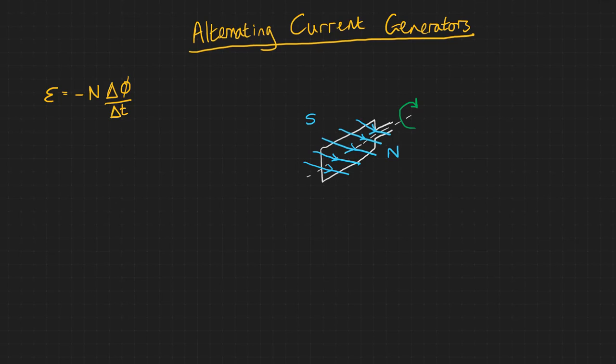Instead let's consider a generator consisting of a loop of wire in a uniform magnetic field which is free to rotate on this axis. As it spins, the flux linkage changes due to the changing area perpendicular to the magnetic field lines. Therefore an EMF should be induced. But how can we calculate this?